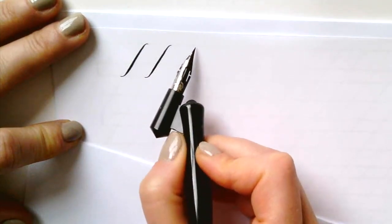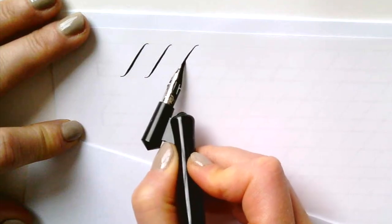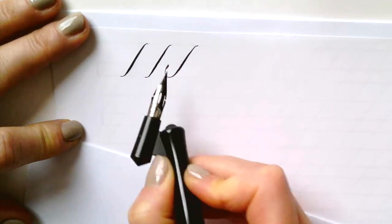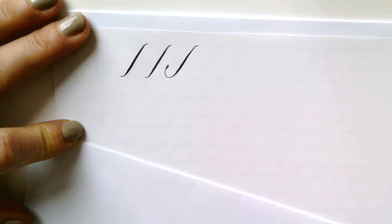So you increase the weight and the pressure and the ink so that the heaviest part is in the middle. You're going to release pressure just before you get to the baseline and then end in a small curve as well.